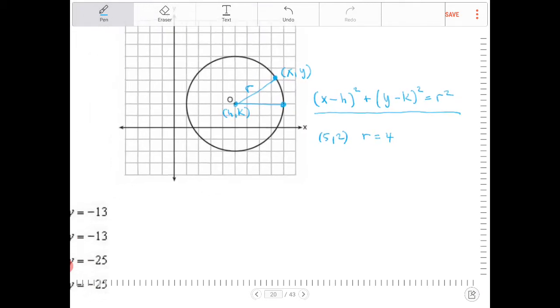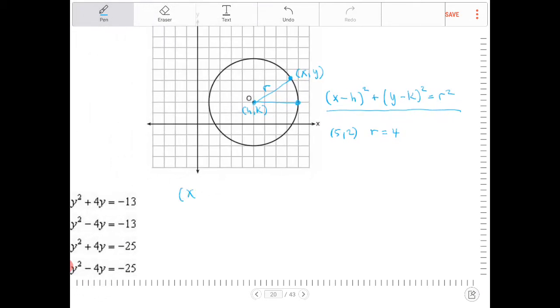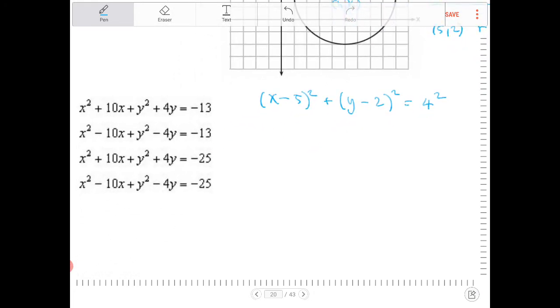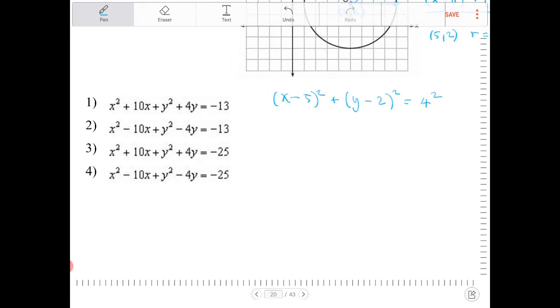So the equation of the circle will be (x - 5)² + (y - 2)² = 4². None of the answer choices match what I have here, so now I'm going to expand this.